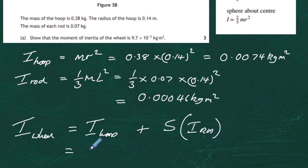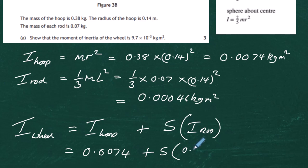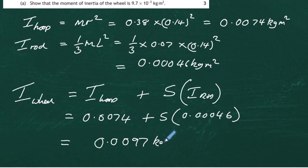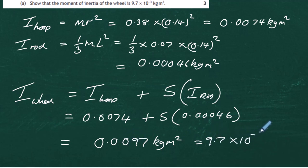The total gives us 0.0074 + 5 × 0.00046, which in a calculator gives 0.0097 kg·m². Putting that into standard form: 9.7 × 10⁻³ kg·m², which confirms the required result.